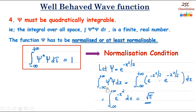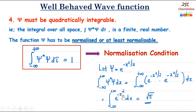Then ∫_{-∞}^{+∞} ψ* · ψ dx = ∫_{-∞}^{+∞} e^(−x²/2) · e^(−x²/2) dx = ∫_{-∞}^{+∞} e^(−x²) dx. The value of this integral is equal to √π.